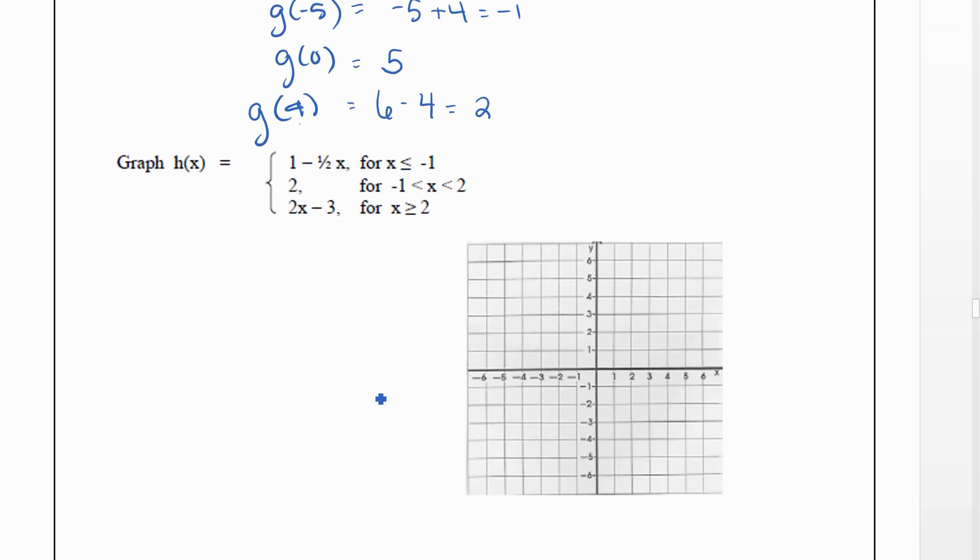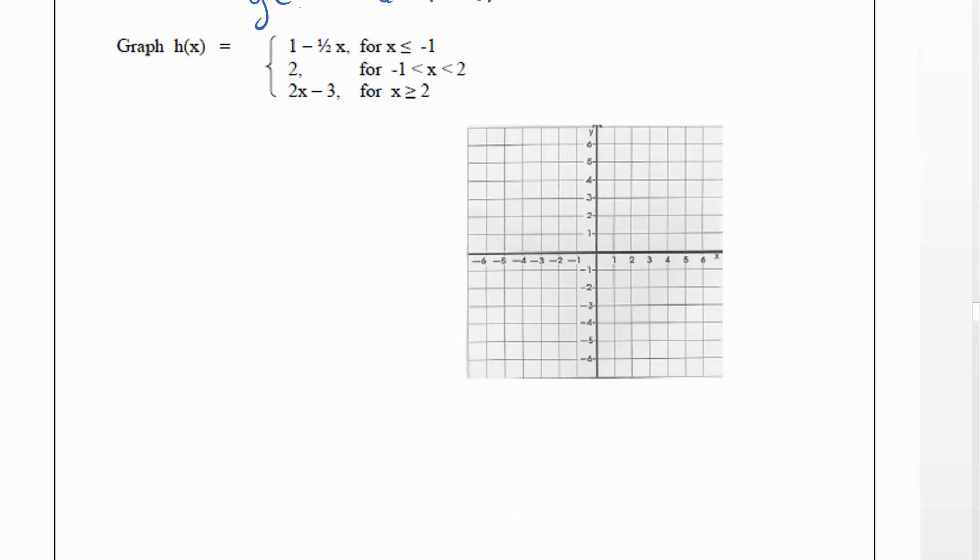Now we're going to do another example where we're graphing. Here's h(x), again in three pieces. When x is less than or equal to -1, we do 1-½x. When x is between -1 and 2, it's just 2. And for x greater than or equal to 2, it's 2x-3. The first thing I like to do is make those vertical dotted lines where we're changing. So at -1 we're going to be switching, and at 2 we're going to be switching.